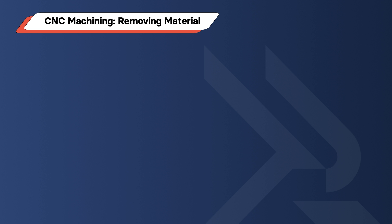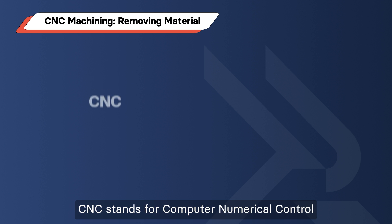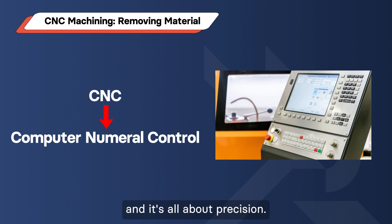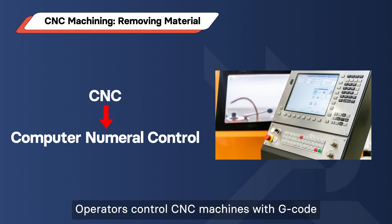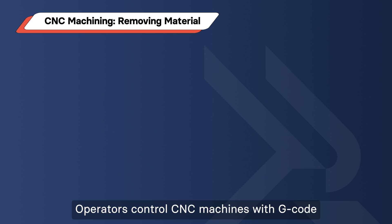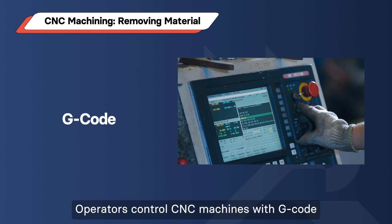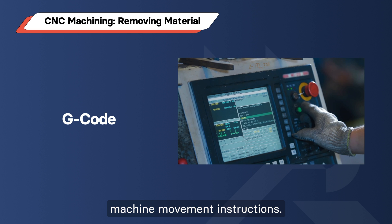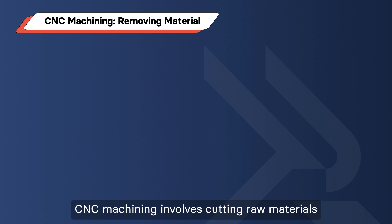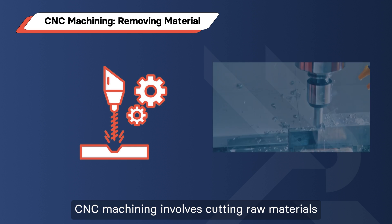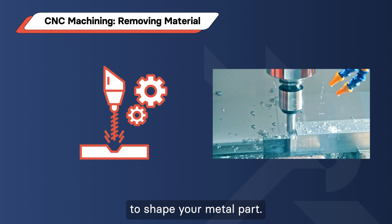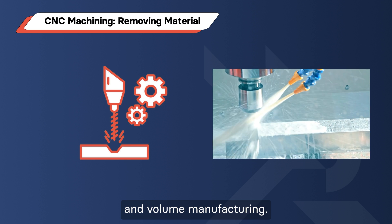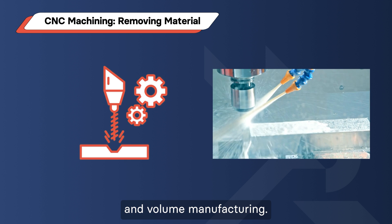CNC Machining – Removing Material. CNC stands for Computer Numerical Control, and it's all about precision. Operators control CNC machines with G-code, a programming language that provides machine movement instructions. CNC machining involves cutting raw materials to shape your metal part. It's perfect for low to medium complexity and volume manufacturing.